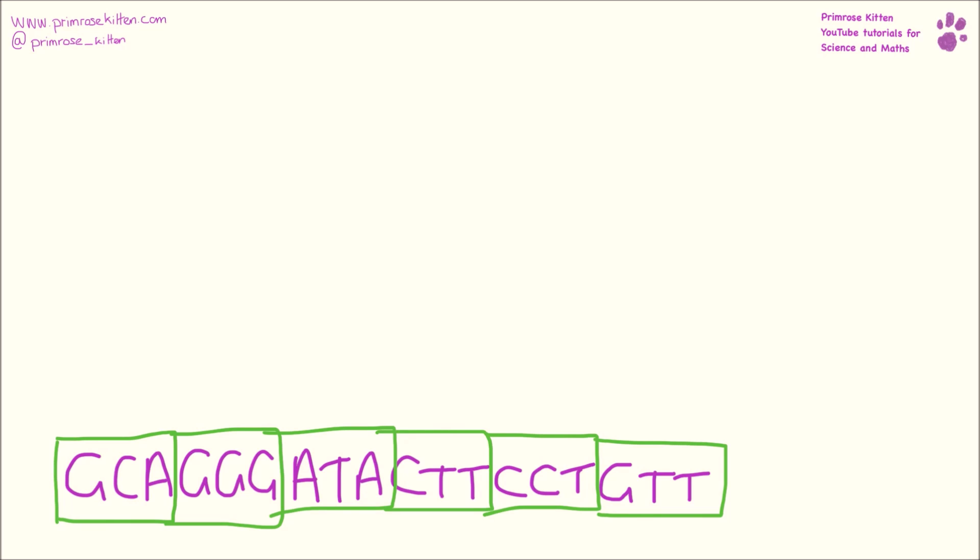So this one here, and you don't have to learn this, I'm just using this as an example. GCA leads to alanine, and then GGG leads to glycine, and then ATA is isoleucine. CTT is leucine, CCT is proline, and then GTT is valine.